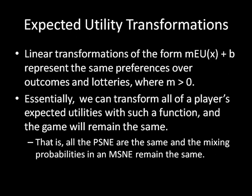Essentially what we're doing is transforming each player's expected utilities with a function, and as long as we do that, the game will remain the same — all of the pure strategy Nash equilibria will remain the same, and all of the mixing probabilities in a mixed strategy Nash equilibrium will be the same. Another important thing to note is that we don't even have to select the same transformation for both players. We can give player one one transformation and player two a different transformation, and all of this works out, as long as the transformation is of the form mx plus b where m is a positive number.